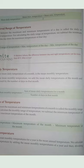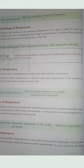Mean annual temperature equals the sum of the mean monthly temperatures of a year divided by 12. For the annual range of temperature, we take the mean monthly temperature of the hottest month minus the mean monthly temperature of the coldest month.